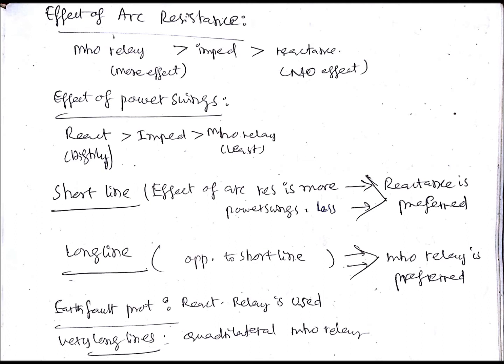The effect of power swings is completely opposite to that of the effect of arc resistance. So the reactance relay is most affected by power swings, while the mho relay is least affected by power swings.